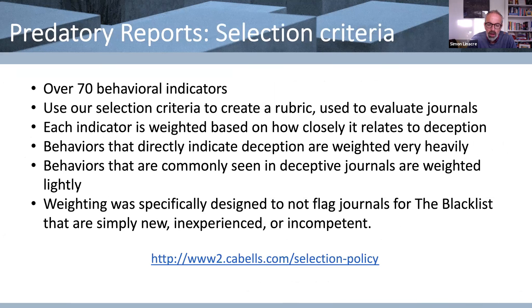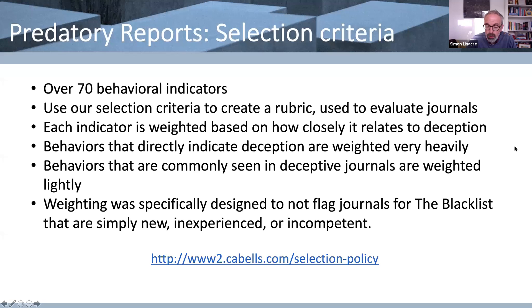The predatory reports database is a subscription product, but as authors you can go to your librarians at your universities and see if they can get a subscription. If not, you can use the selection policy yourself. You can go to cabells.com and look at the selection policy, and see those 70-plus behavioral indicators yourself. If you're thinking about submitting to a journal, you can look at those criteria and apply them yourself. If you've got a number of suspicions with regards to those criteria, then it's probably better to think: this is potentially a predatory journal — maybe choose something else.